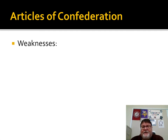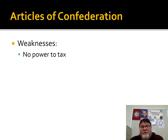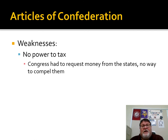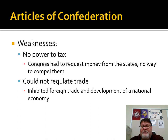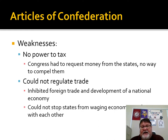What we mainly need to know about the Articles of Confederation are its weaknesses. Number one: no power to tax. While none of us like taxes, they are a reality. Congress had to request money from the states, with no way to force states to pay up — states gave some but never the full amount, and usually not on time. Also, the national government could not regulate trade, which was necessary for the national economy. What was happening was all the states were waging economic warfare with each other over foreign and interstate trade, causing the economy to take a dive.